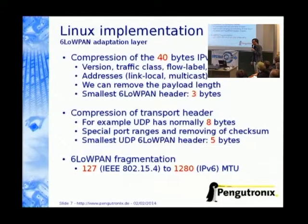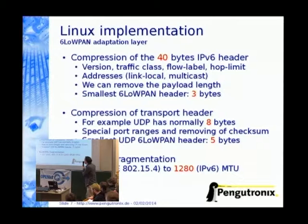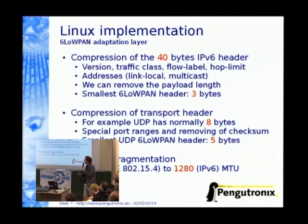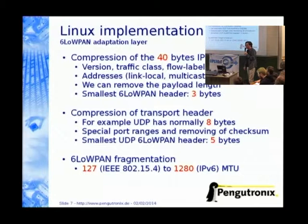What exactly does the 6LoWPAN adaptation layer do? It compresses the 40-byte IPv6 header. There are fields like version, traffic class, flow label, hop limit, and mainly the addresses, which are 32 bytes. We can compress the link-local and multicast addresses, and we can also remove the payload length. What we actually have is a small 6LoWPAN header of just three bytes. Additionally, we can compress the transport header — for example, UDP, which normally has eight bytes, has a special port range. We can also remove the checksum because the MAC layer handles it. The smallest UDP 6LoWPAN header is then only five bytes long.